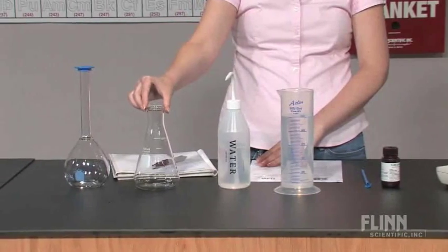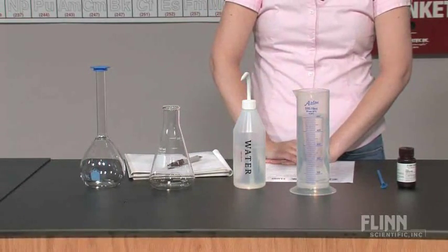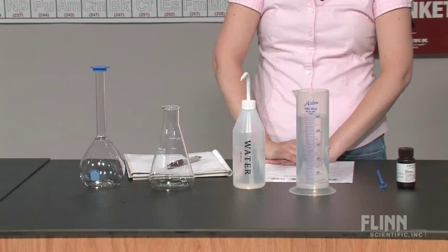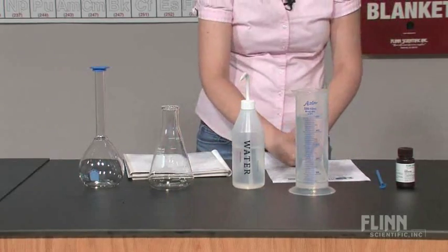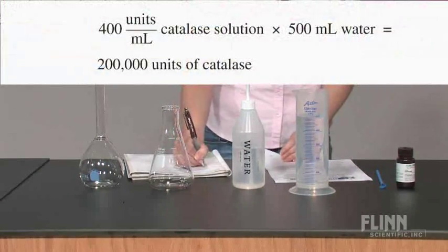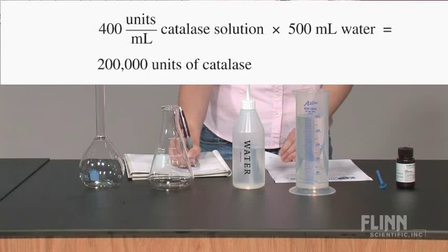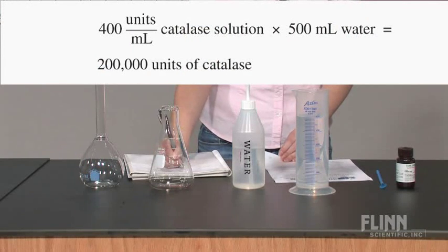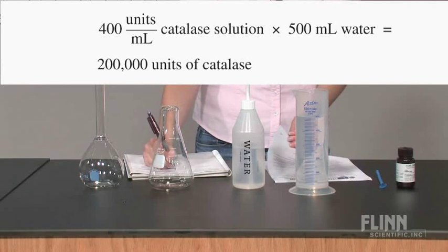In most cases, graduated cylinders provide sufficient accuracy for measuring the water. Next, determine the concentration of the catalase solution required in units per milliliter. In this example, we will set the desired concentration to 400 units per milliliter.